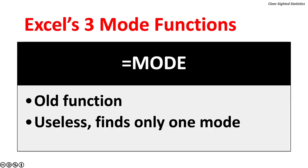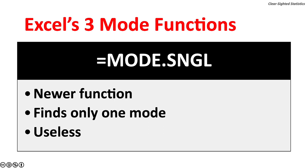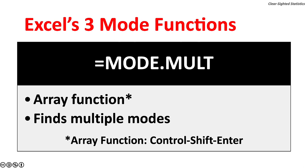Excel has three mode functions. The first is the MODE function — one of Excel's original functions — but it is useless because it finds only one mode. The second is MODE.SNGL, a newer function, which is also useless because it finds only one mode. MODE.MULT is the third function; it finds multiple modes. It is an array function. To enter an array function, click on the cell or cells where you want the answer, enter the formula, and press Ctrl-Shift-Enter. Excel will enter braces around the formula.